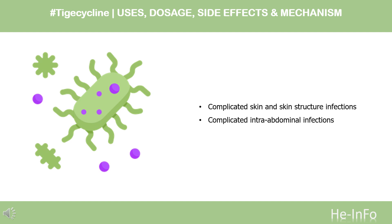Streptococcus anginosus group (includes S. anginosus, S. intermedius, and S. constellatus), Bacteroides fragilis, Bacteroides thetaiotaomicron, Bacteroides uniformis, Bacteroides vulgatus, Clostridium perfringens, and Peptostreptococcus micros.